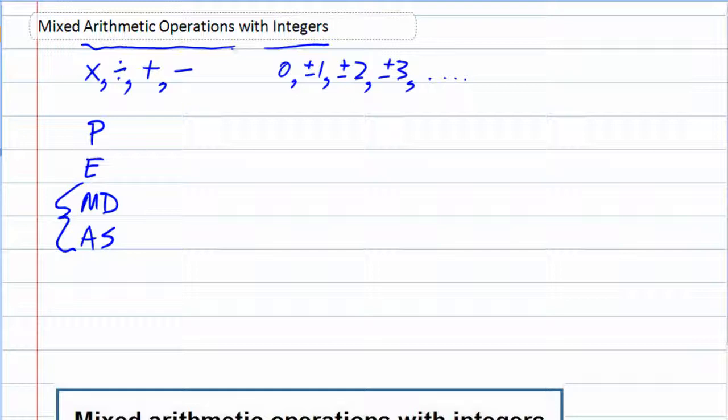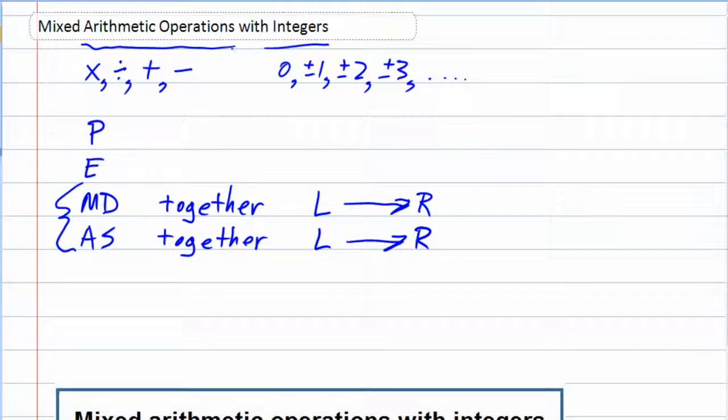And multiplication and division, it's important they do not get done multiplication and then division. They actually get done together. And if we have more than one, then we start on the left and move to the right. The same is true for addition and subtraction. It's not addition and then subtraction. It's done together, and they are also done from the left to the right if we have more than one of those.